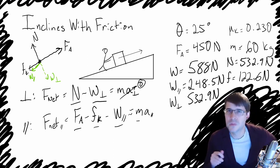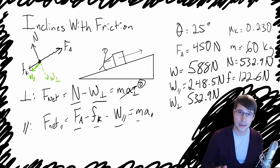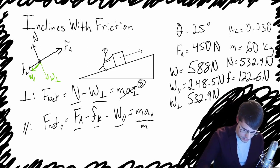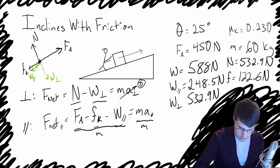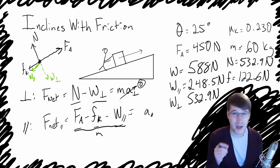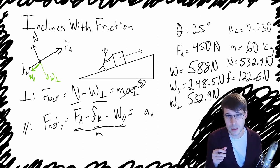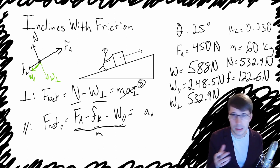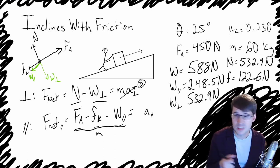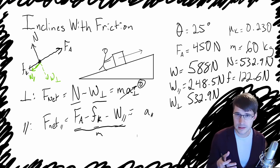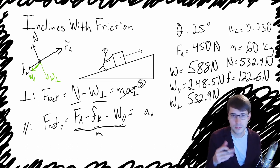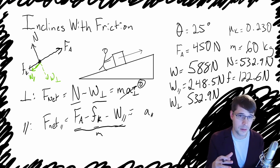Now we have all the values we need to find the acceleration. We divide both sides by the mass of the object, so the acceleration equals the applied force minus the friction force minus the weight parallel, all divided by the mass. This equation is particular to this case — in different situations, going uphill, downhill, or pushing in a different direction, you'd develop a different equation based on your force diagram.